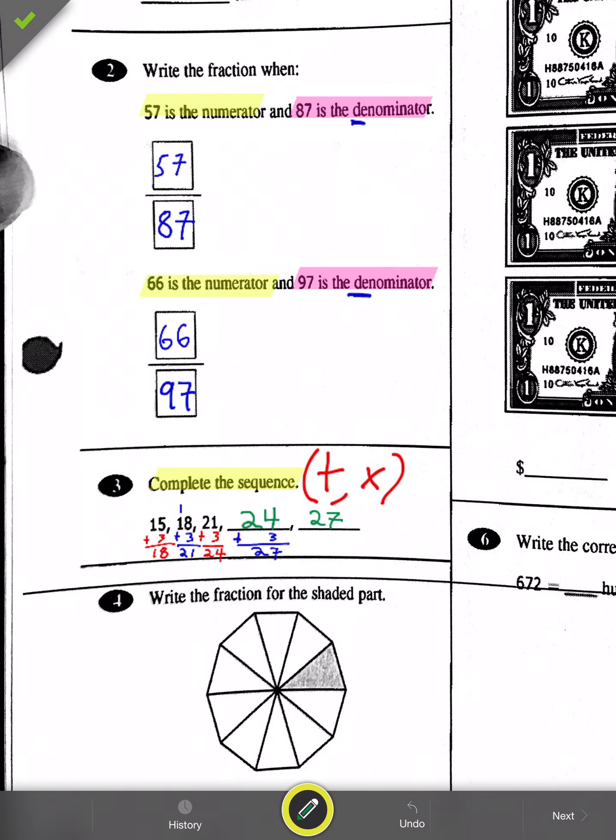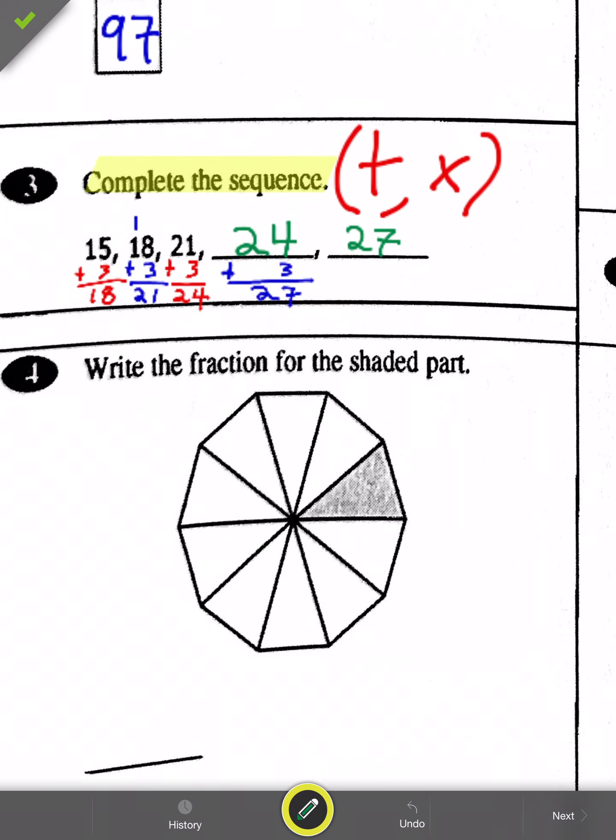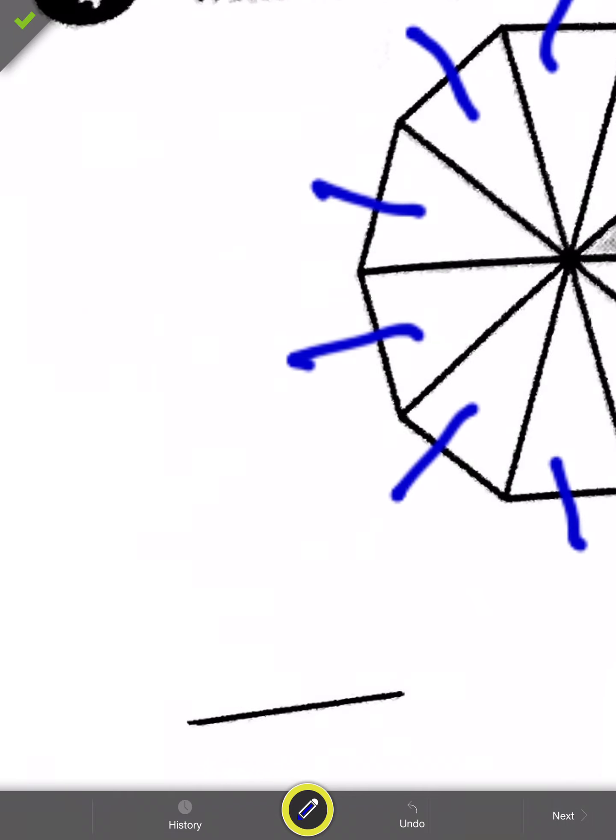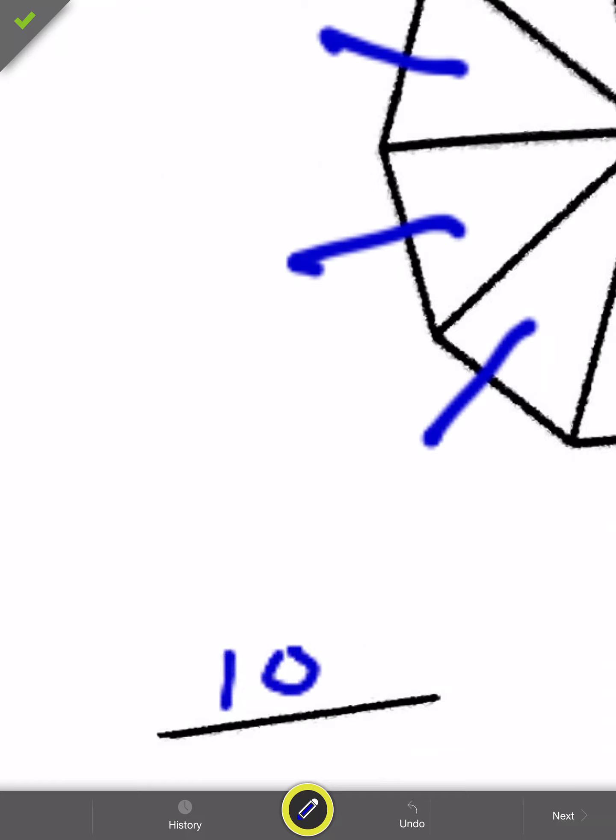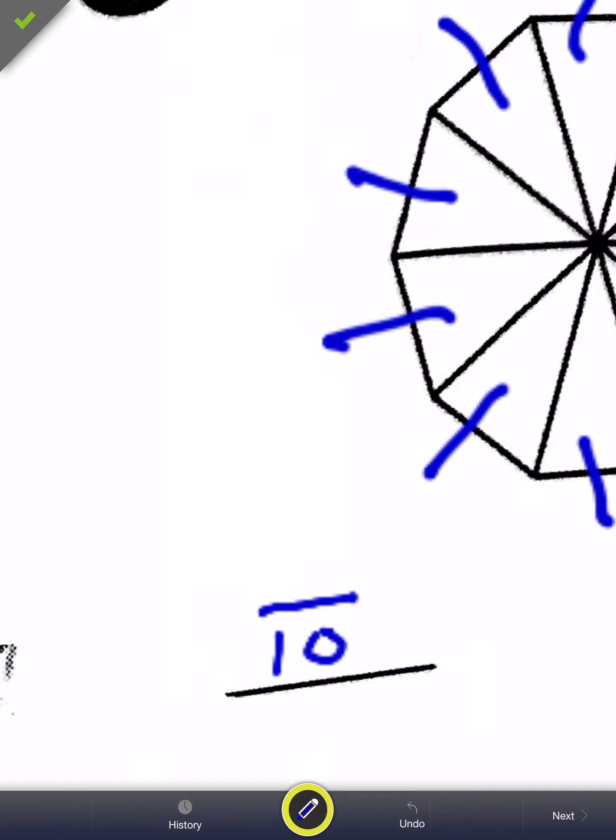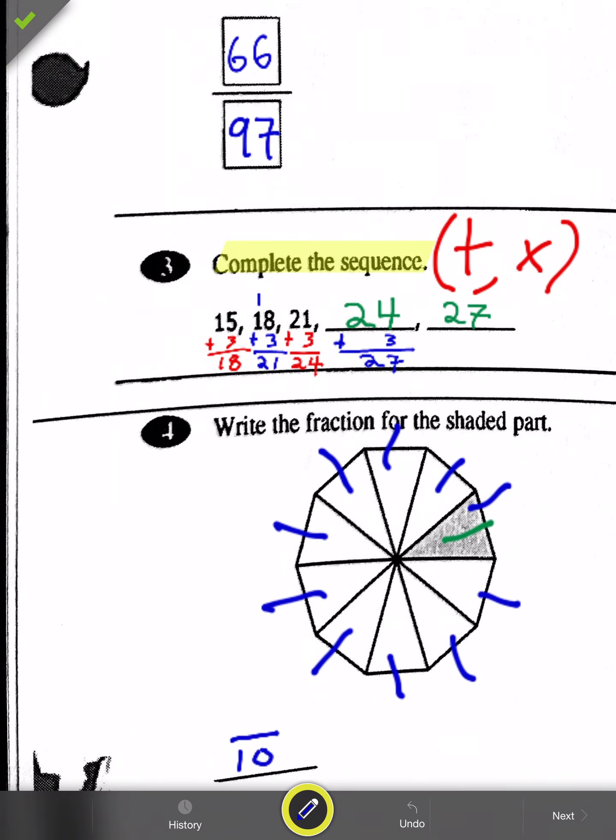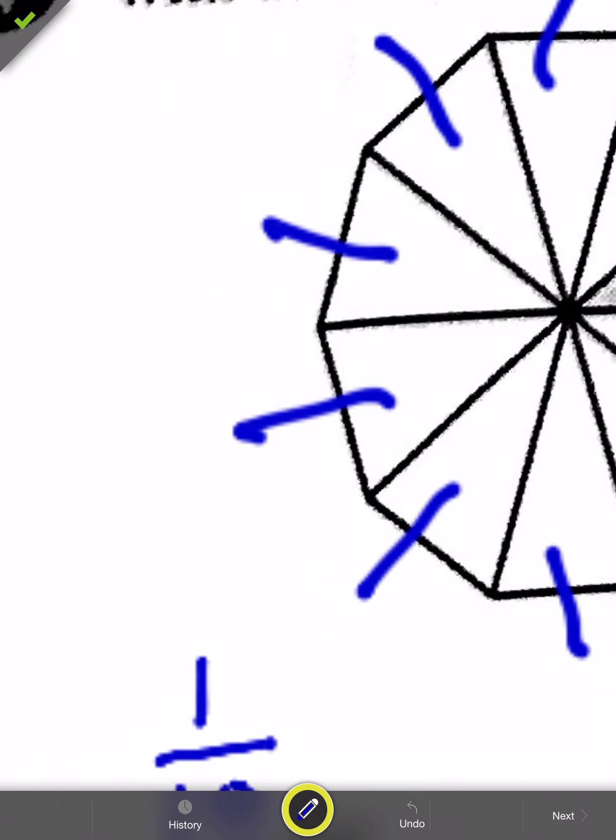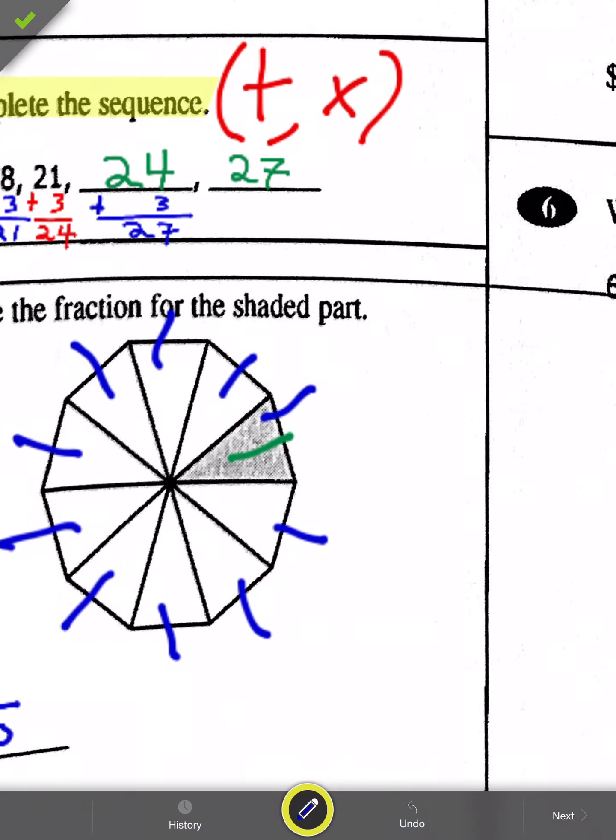Okay, moving right along. We're going to check out number 4 here. Write the fraction for the shaded part. Well, there's only one shaded part. That was easy to figure out, but now I've got to find out how many parts there are in this whole. So let's count them up: 1, 2, 3, 4, 5, 6, 7, 8, 9, 10. So my denominator is going to be 10. And we've already identified what our numerator is. There's only one triangle shaded here, so it's going to be 1 tenth. Numerator is 1, denominator is 10.